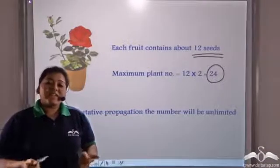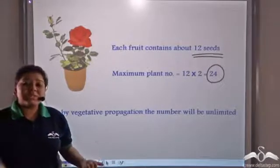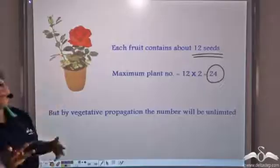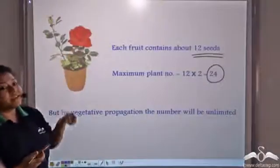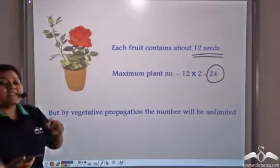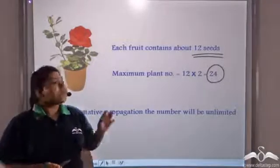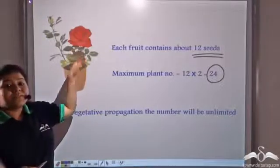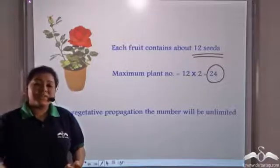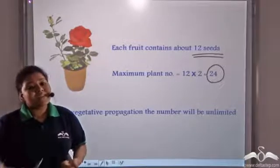But if you look at vegetative propagation, the number of new plants that can be produced is unlimited, because you can cut any number of stems from an existing rose plant — approximately fifty to sixty cuttings. So you will get fifty to sixty new rose plants from just one rose plant. Hence, the number of new plants grown through vegetative propagation is a lot more than what can be grown through sexual reproduction.